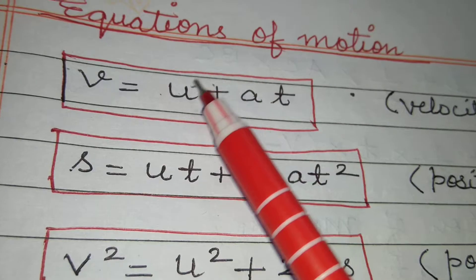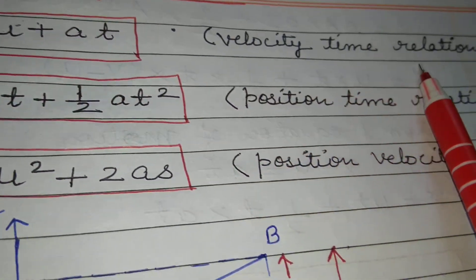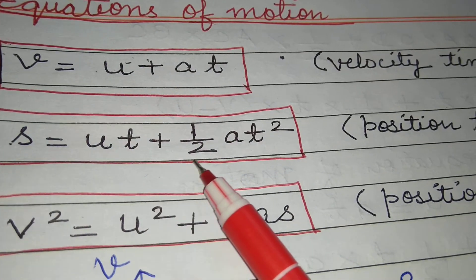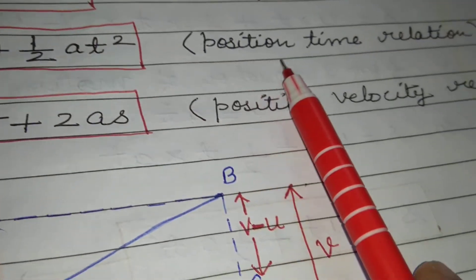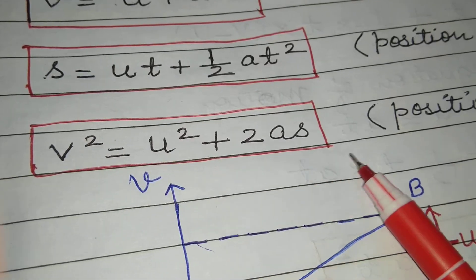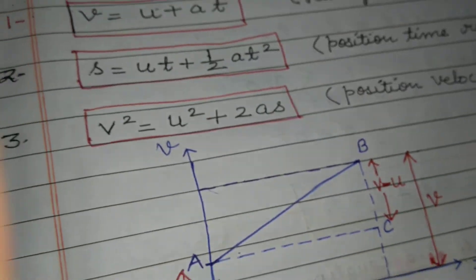The first equation, v equals u plus at, is called velocity-time relation. Second equation, s equals ut plus half at squared, is called position-time relation. And third equation, v squared equals u squared plus 2as, is called position-velocity relation.